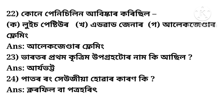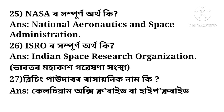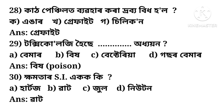Next question: What is the full form of NASA? The answer is National Aeronautics and Space Administration. The following question asks the full form of ISRO. The answer is Indian Space Research Organisation. After that, the question asks the chemical name of bleaching powder. The answer is Calcium Oxychloride or Hypochlorite.